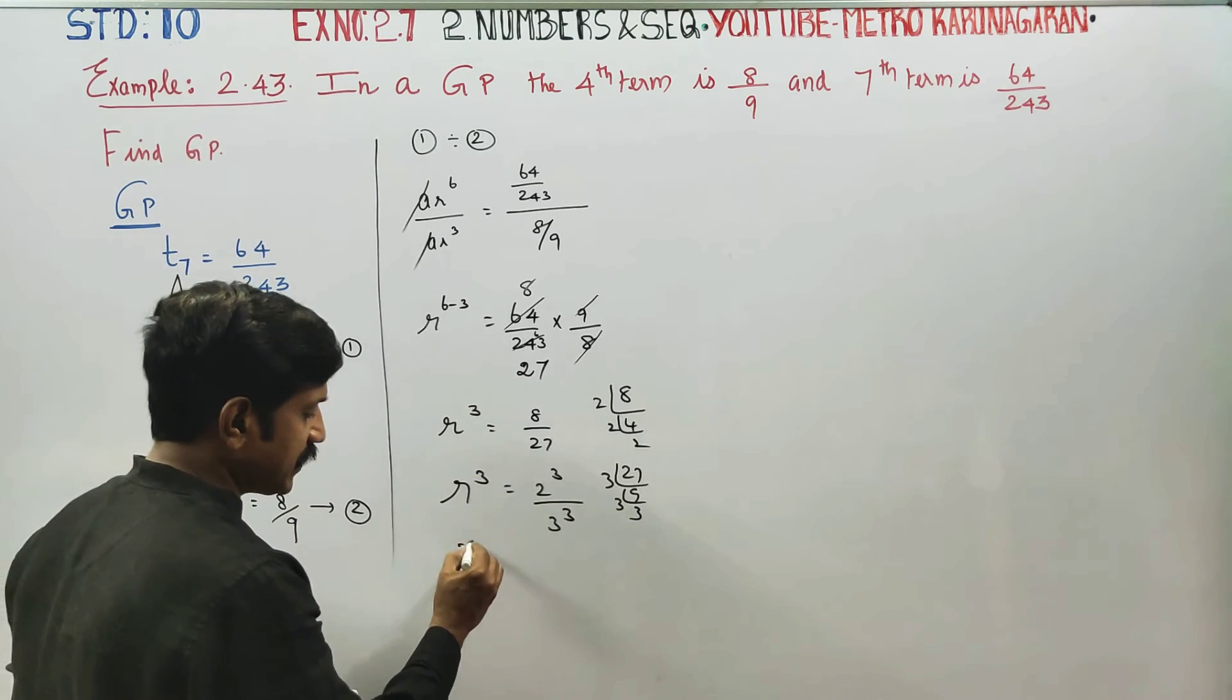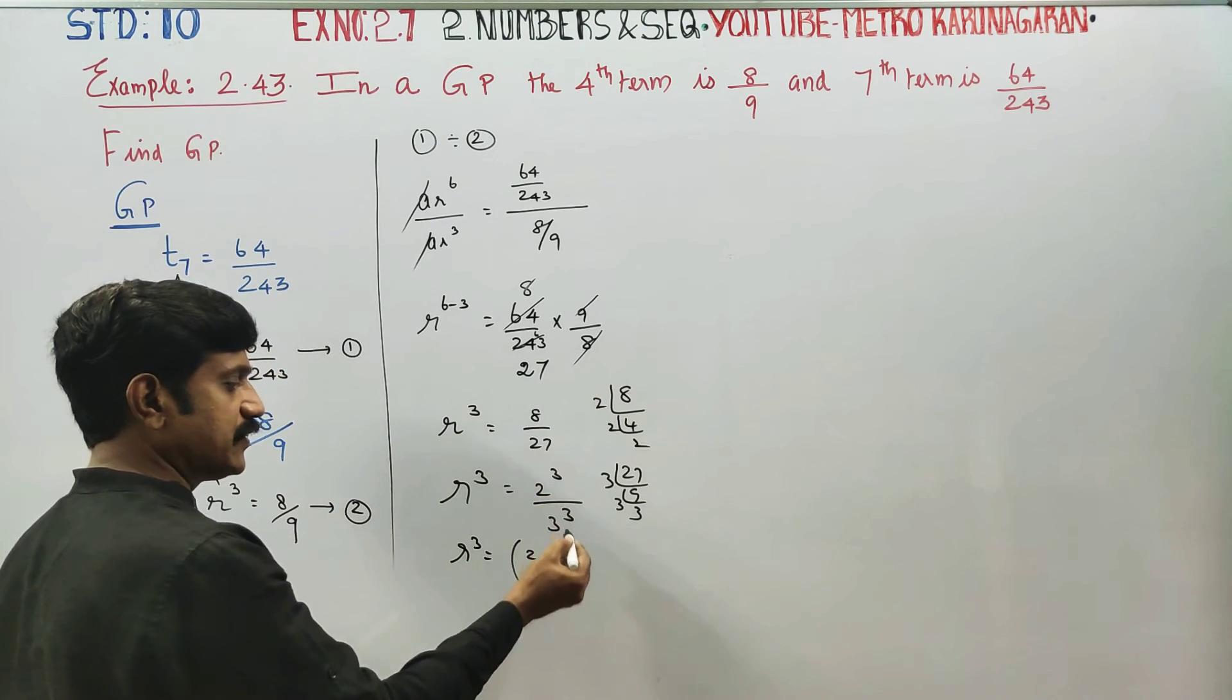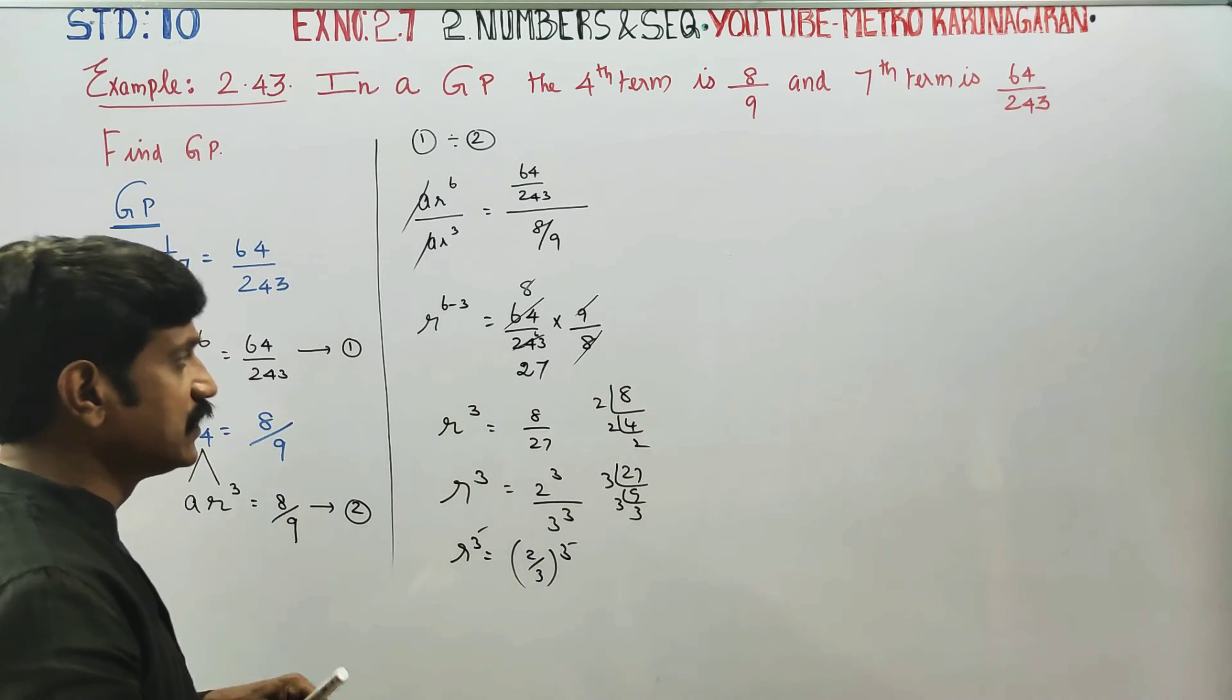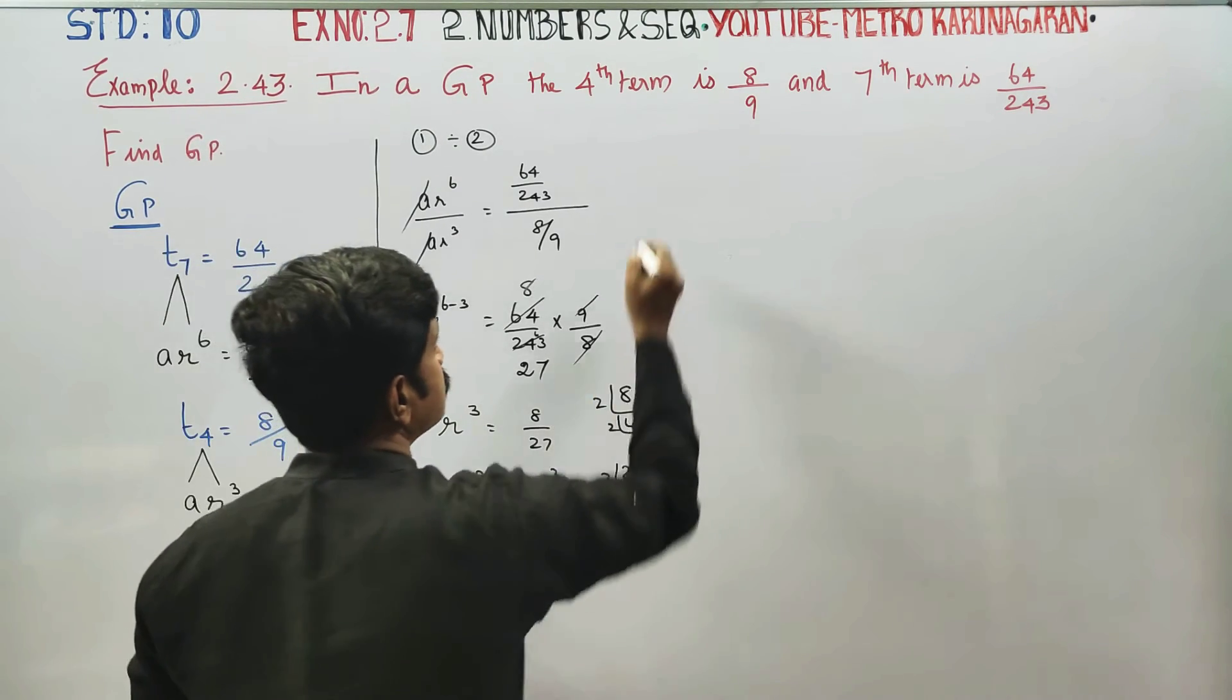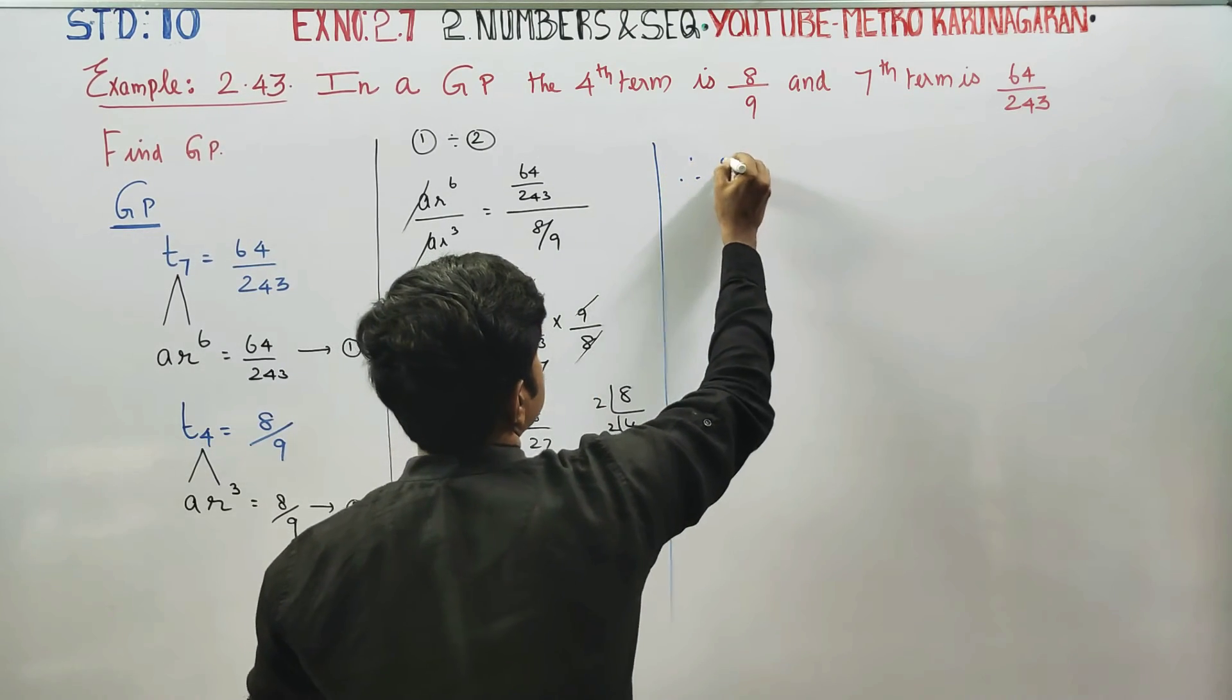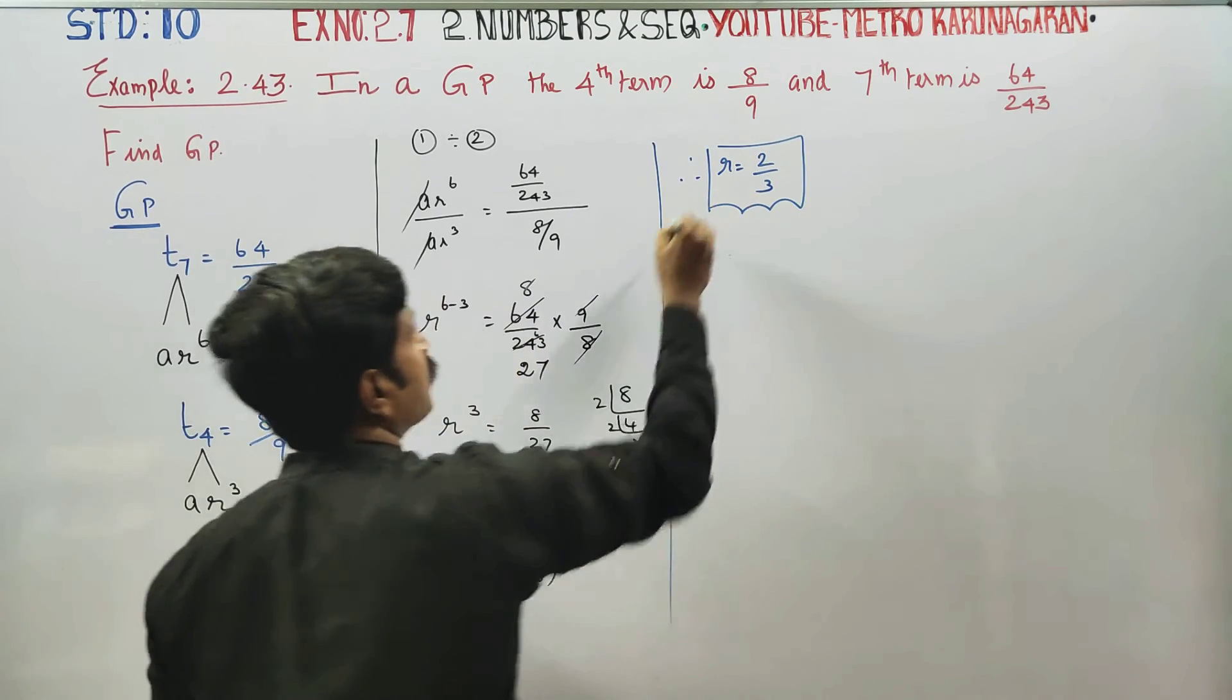R power 3 is equal to 2 by 3 whole cube. When powers are same, bases are equal. Therefore, when powers are same, bases are equal. R is equal to 2 by 3. We have successfully found the value of R.